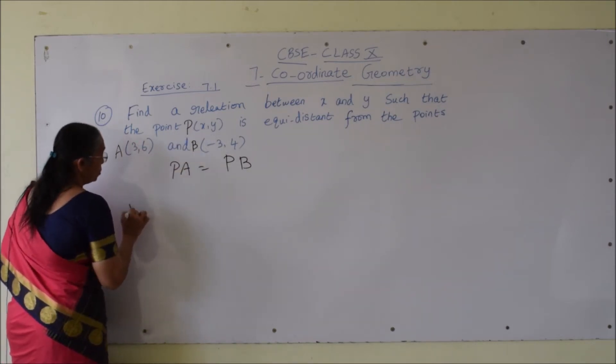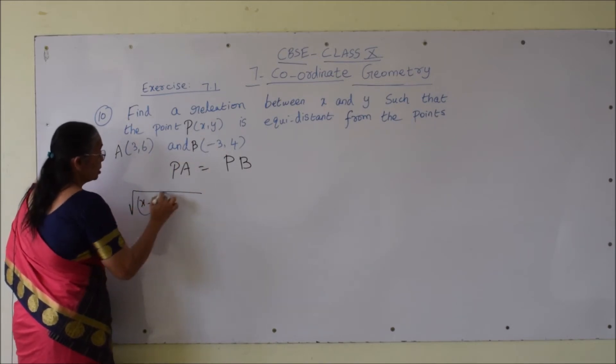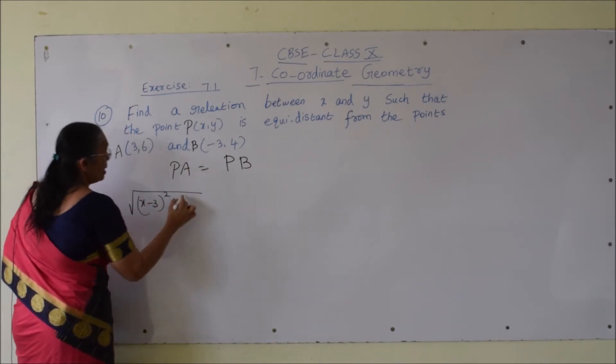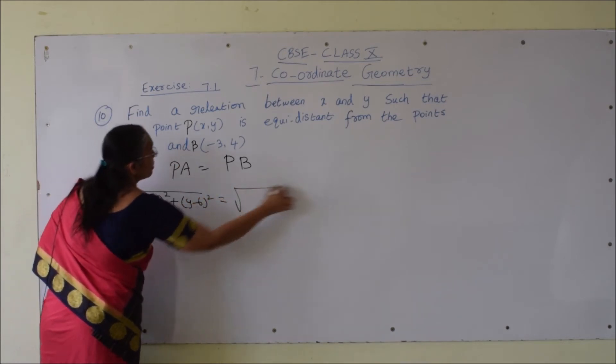PA is nothing but root over (x minus 3) whole square plus (y minus 6) whole square is equals to